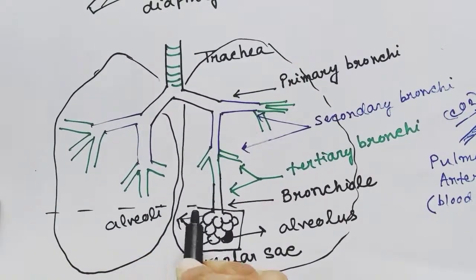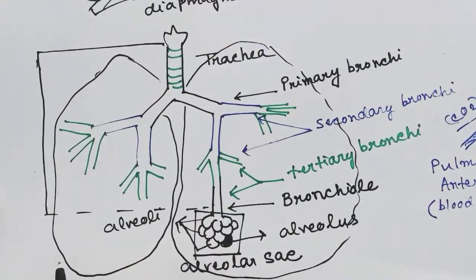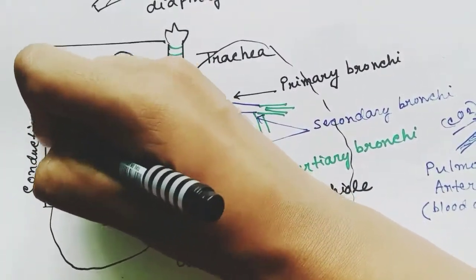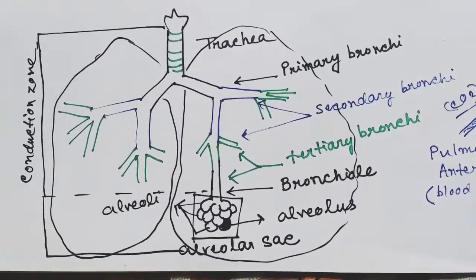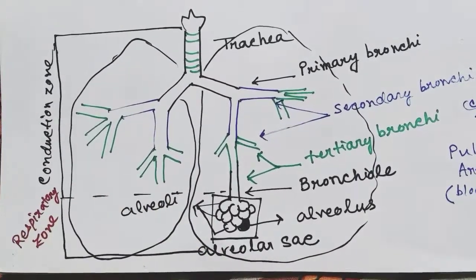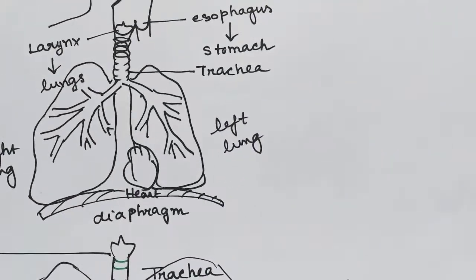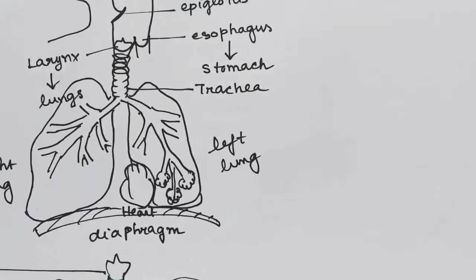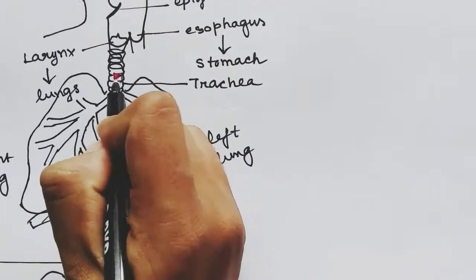From the trachea to the beginning of the alveolus, this region is called conduction zone as the air is being conducted throughout this zone. In the alveolar sac, the gaseous exchange occurs, so it is called respiratory zone. Now we will look into the cells of the different region—the cells of the trachea.